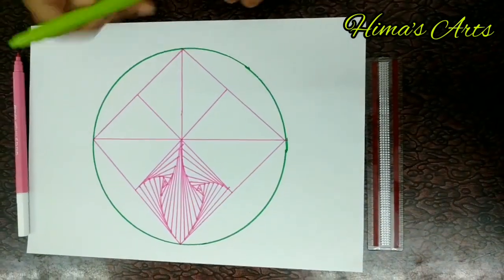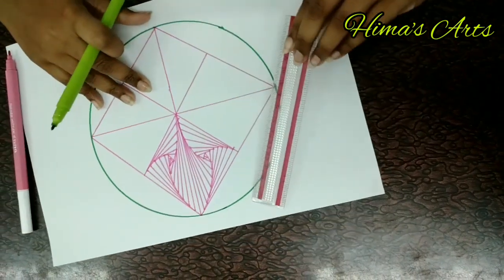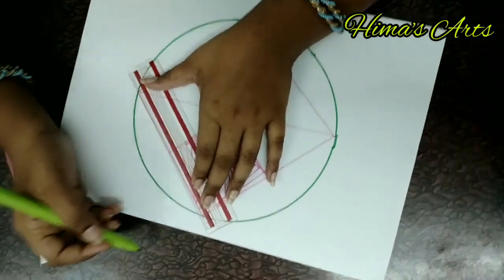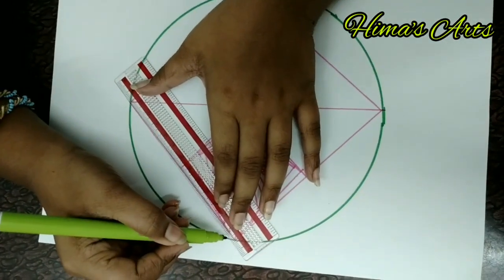Then I will take a green colored sketch pencil and draw like this. I will draw the pattern and show.